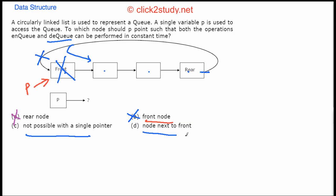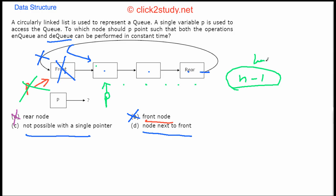What about P pointing to the node next to the front? It's essentially the same problem. If you want to delete the front node, the last node's pointer still has to be updated to point past front. You still have to access the almost complete list — it's n minus one steps — so it is again not constant time.